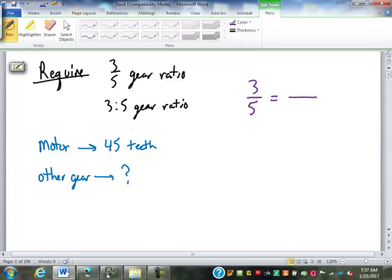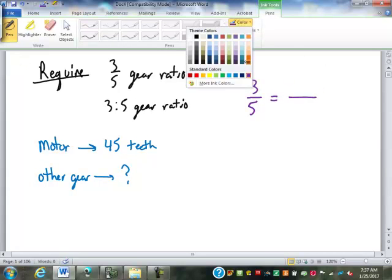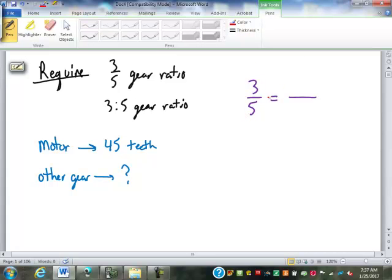How do we find the missing amount? Well, first of all, which one of these numbers, the three or the five, represents the teeth on the motor? The five. That is the driving number. The motor is the driving gear. So the other is the three. So that means that over here on the other side, the 45 teeth for the motor has to go on bottom. Because that's the driving gear. So what we're looking for is this number on top.